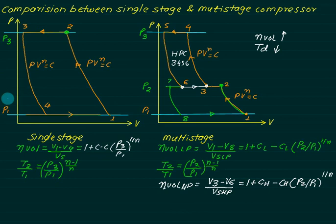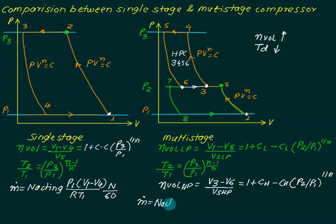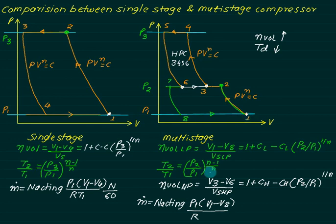The mass flow rate equation is: ṁ = (number of acting strokes) × P1 × (V1 − V4) / (R × T1) × (N/60) for single stage. For the LP cylinder of multi-stage, ṁ = n_acting × P1 × (V1 − V8) / (R × T1) × (N/60), selecting suction point one with temperature T1.